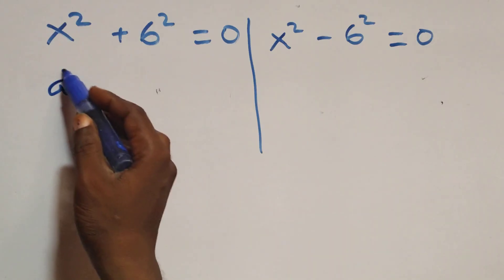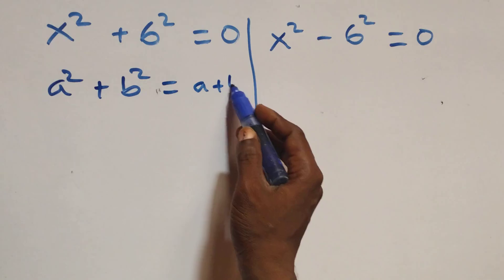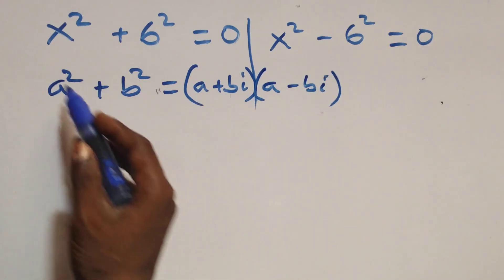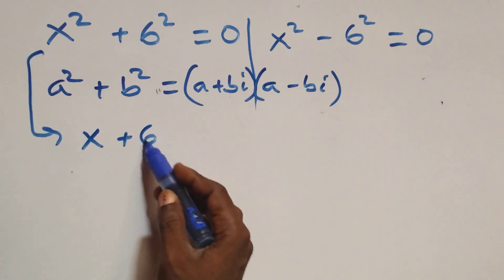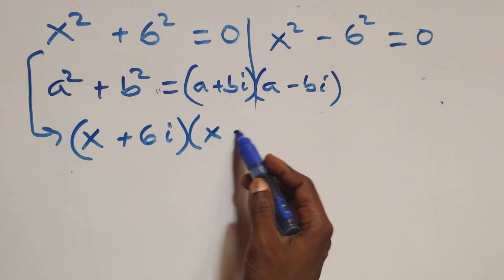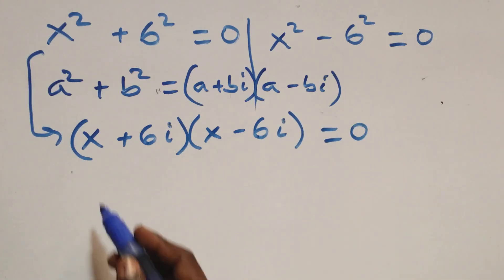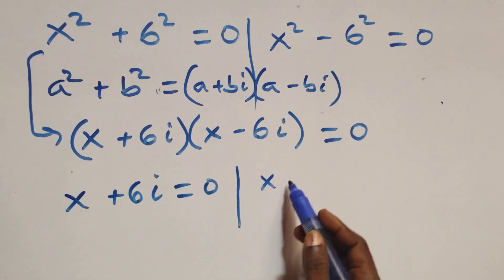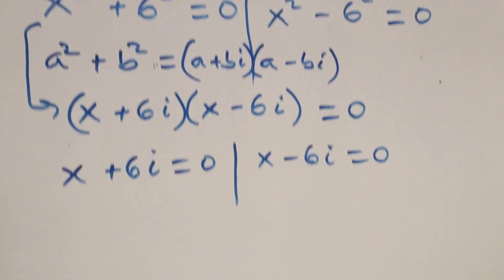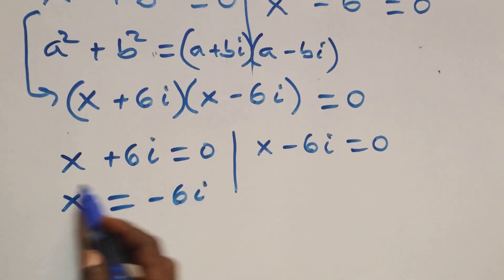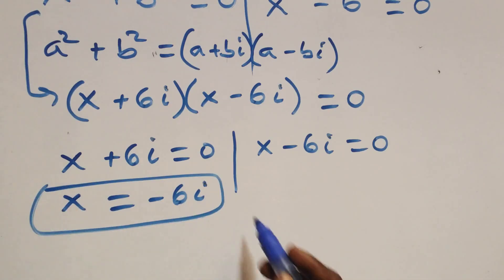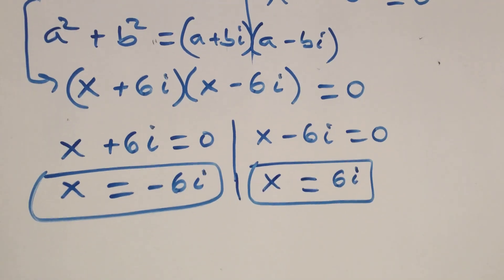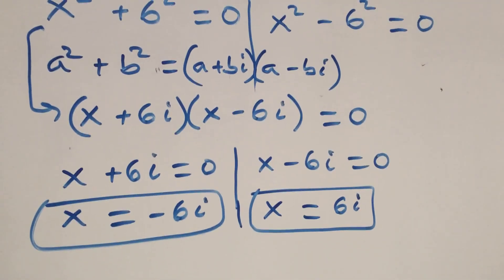Solving the first case: x² + 36 = 0. This follows the identity a² + b² equals (a + bi)(a − bi). So this becomes (x + 6i)(x − 6i) = 0, giving two possible cases: x + 6i = 0 or x − 6i = 0. Therefore x = −6i, which is a complex solution, or x = 6i, which is also a complex solution — making two complex solutions.